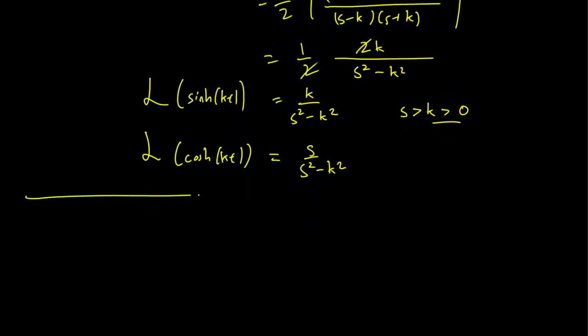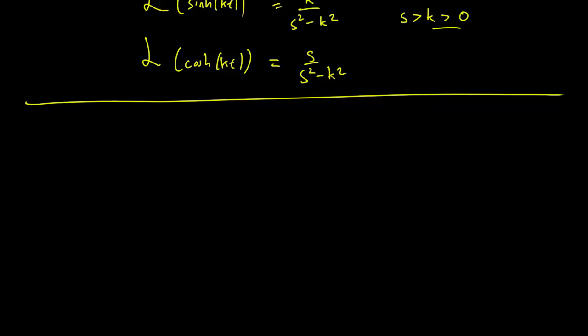Let's work on the sine function now. The sine function can also be expressed in terms of exponentials. This is the way to write it down: e^(ikt) minus e^(-ikt) over 2i.